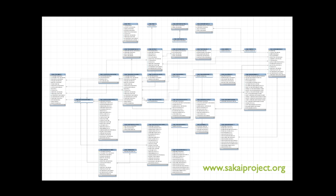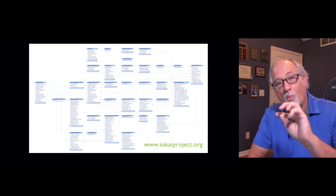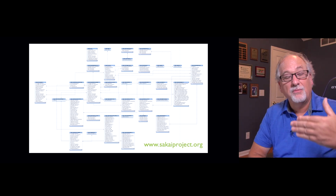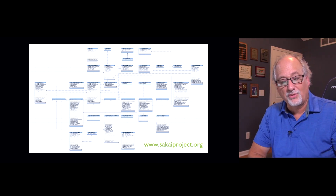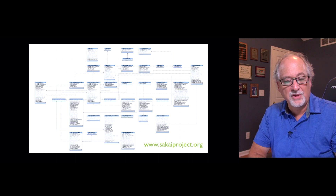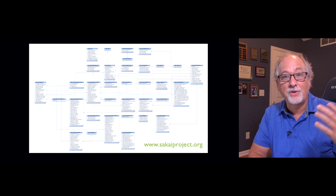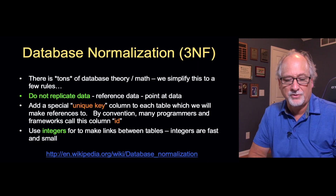Another project I work on is called Sakai — it's an open-source learning management system. This is just a tiny fraction of its data model, but if you want to work in this application, improve something, or add a feature, you have to figure out this data model. Where the data goes shows up flat in the user interface, but it's stored in very specific linked locations. That's why you see all these little boxes connected by lines — the lines are the links between the various tables.